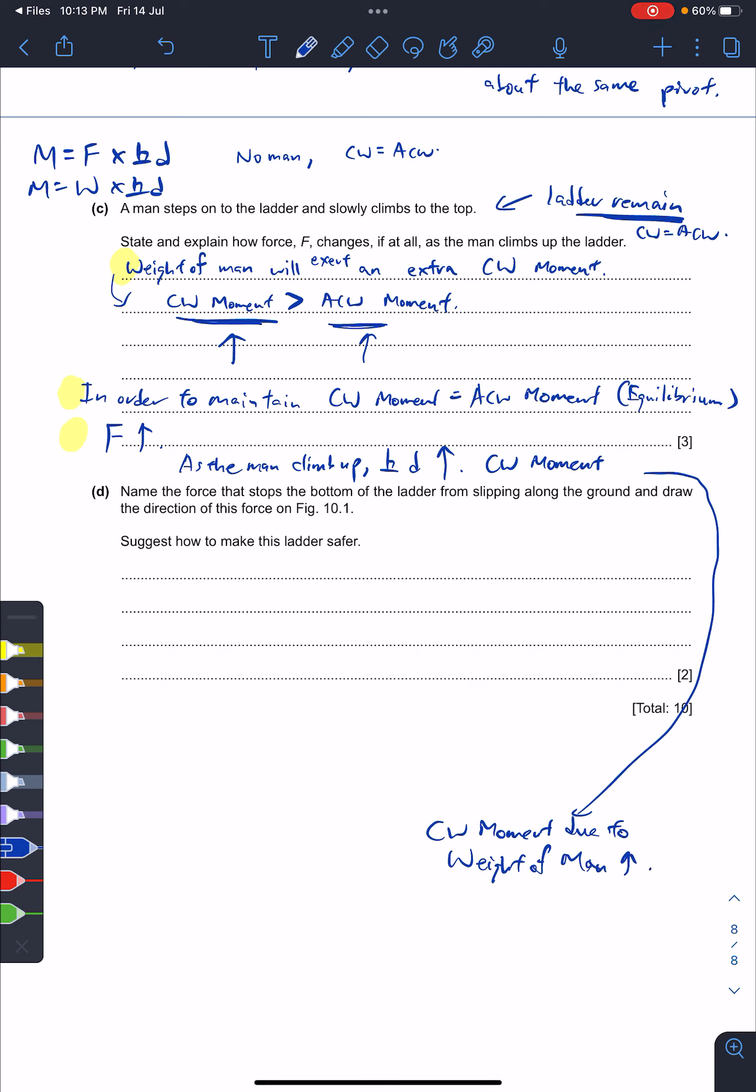Which means your clockwise is increasing. So the man goes on, the clockwise moment increases. Now he keeps on climbing - his weight causes more moment, which means the clockwise moment increases more. So now your clockwise increases more, and remember the ladder doesn't move. That means your ACW also must increase more so they can be the same, meaning your force will increase more. So the one highlighted in yellow is the answer.